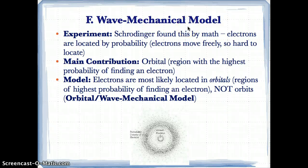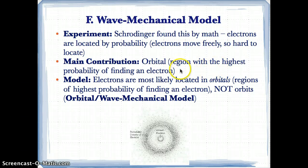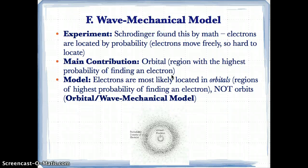The wave mechanical model comes from Schrödinger, who used math to develop it. He stated that electrons are located by probability — electrons move freely around the nucleus, so it's hard to pinpoint their exact location, but there's a probability they could be in various places. His main contribution was the orbital: the region with the highest probability of finding an electron. Orbitals are fuzzy gray regions, unlike Bohr's fixed circular orbits.